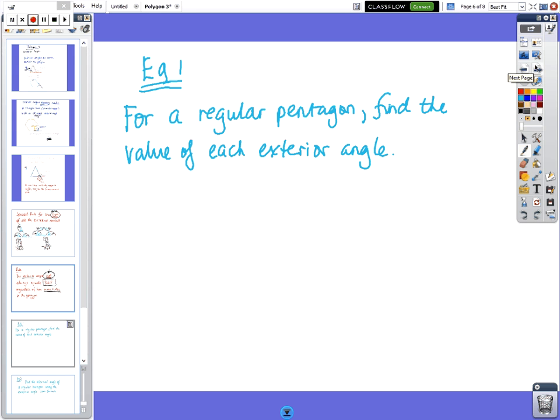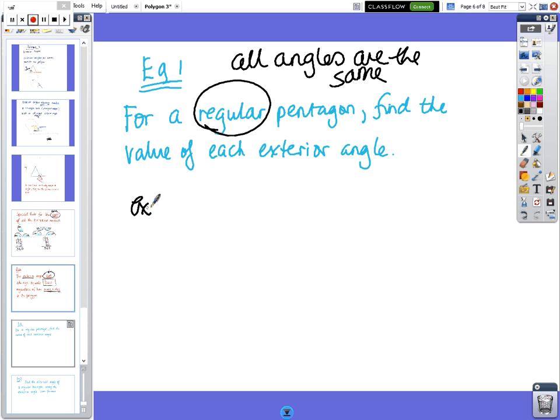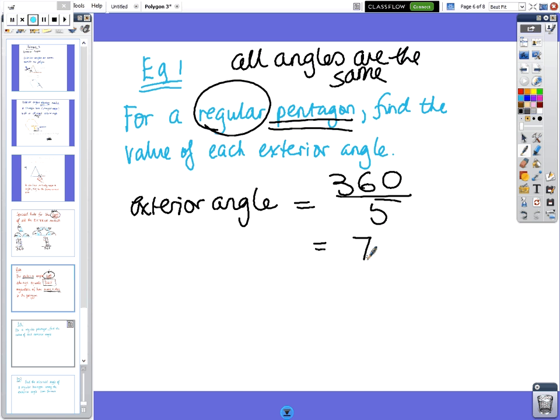OK, so here's an example for a regular pentagon, find the value of each exterior. Now the word regular means all the angles are the same. OK, so don't forget that regular, all the angles are the same. And so what we've got is the exterior angle. OK, so we've got a pentagon, which has five sides, and it always adds up to 360, and we divide by 5, and when we do that, we get 575.